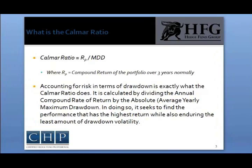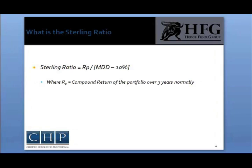The Calmar ratio is the average return on a portfolio, which generally covers a 3-year period, divided by the maximum drawdown of that portfolio. The Sterling ratio is very similar and the calculation is the same, except in the denominator the maximum drawdown has an arbitrary amount subtracted or added to it. In most cases, the amount is 10%.